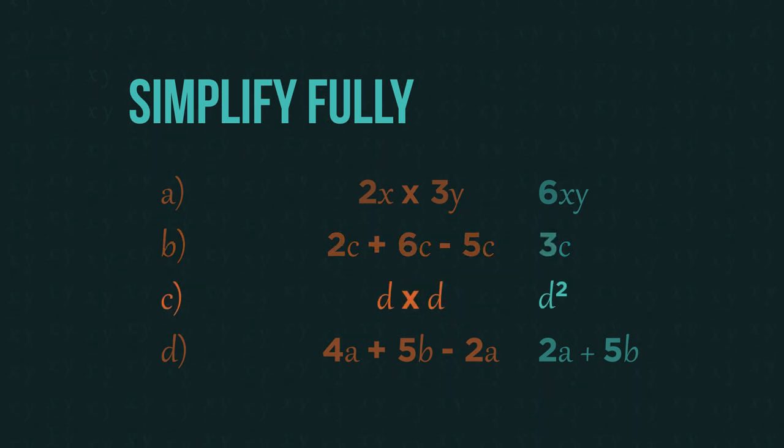Here, we need to get rid of the multiplication sign, which would give us dd. But we can improve on that even further by writing d squared.